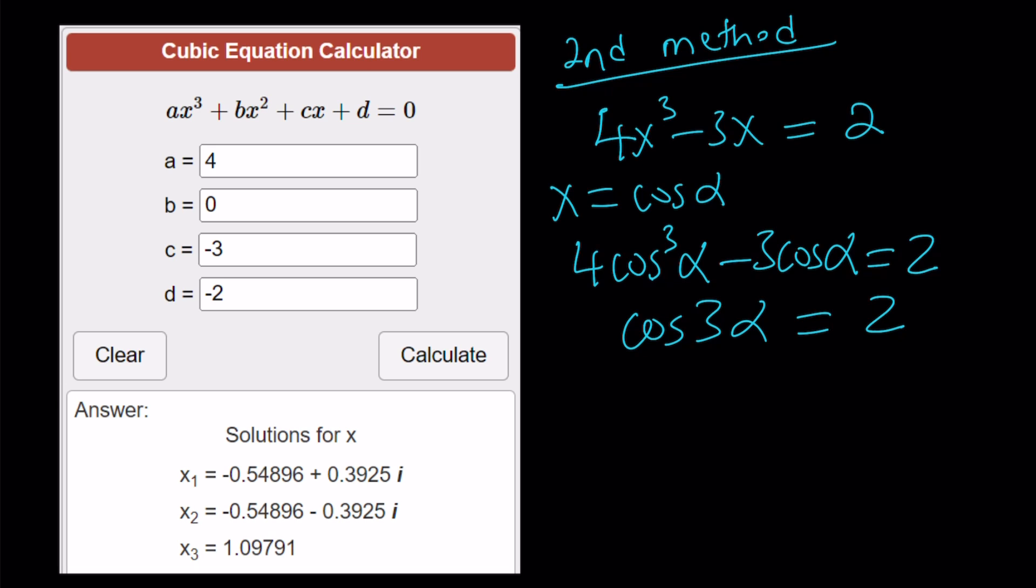Why? Because cosine has to be between negative 1 and 1 inclusive. So cosine of a real angle cannot be 2. Can it be complex? And can we find the complex solutions from here? That is a good question. That is for you to think about. But we don't get any solutions from here. That's why this method does not work.